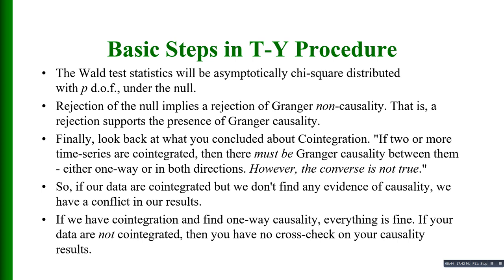Finally, we must look at what we concluded about cointegration. If two or more time series are cointegrated, then there must be Granger causality between them, either one way or in both directions. However, the converse is not true — if there is causality between the series, they may not necessarily be cointegrated. So if our data are cointegrated but we do not find any evidence of causality, we have a conflict in our results. If we have cointegration and we find one-way causality, then everything is fine. If our data are not cointegrated, then we have no cross-check on our causality results.